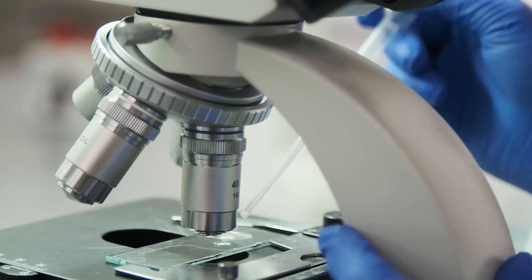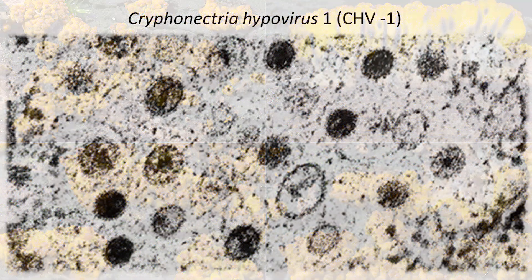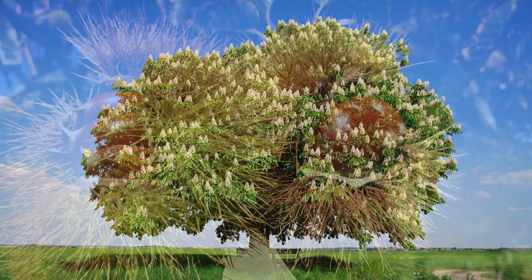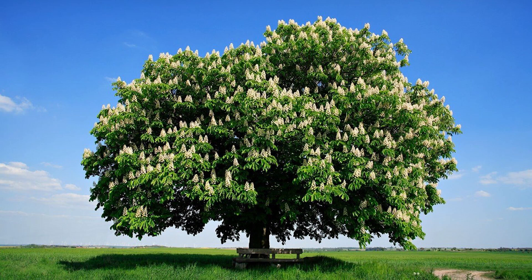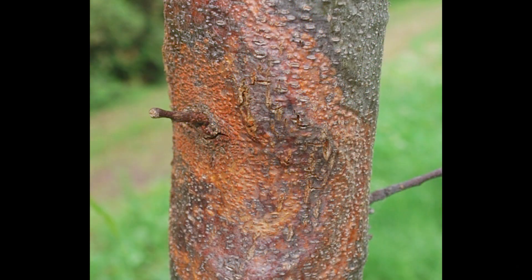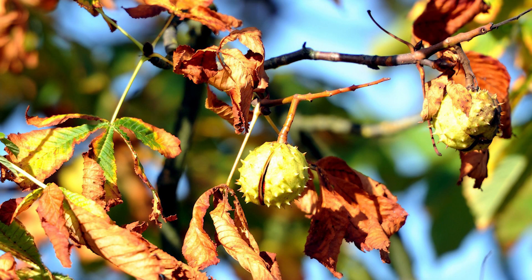Hypovirulence attracts the attention of scientists because of its potential to be used for biocontrol of fungal diseases. The most studied case of hypovirulence is the interaction between the phytopathogenic fungus Cryphonectria parasitica and its virus Cryphonectria hypovirus 1. Cryphonectria parasitica is the causal agent of chestnut blight, a devastating disease of chestnut trees. Symptoms include reddish-brown bark patches, which develop into cracked cankers that kill twigs and limbs.